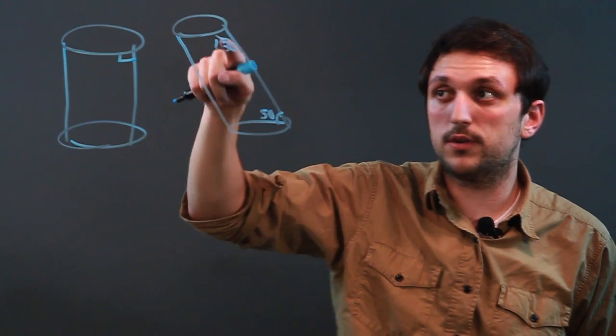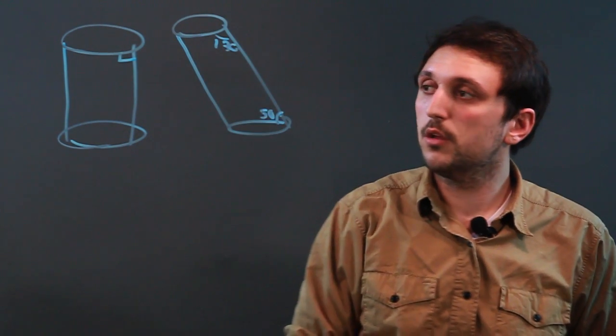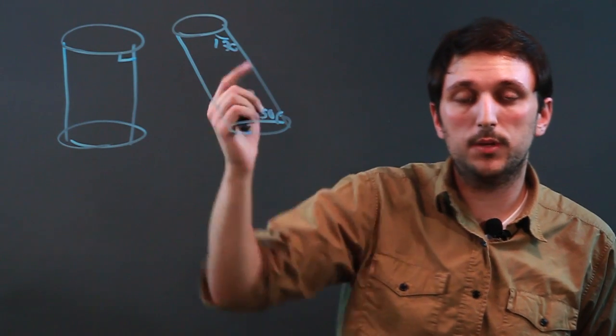These would be alternate interior, they add up to 180. So we have the right circular cylinder, we have the oblique cylinder.